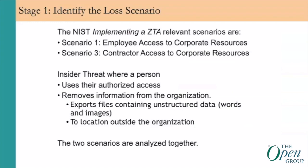Getting down to the brass tacks, the first stage is to identify what is the loss scenario. We have two specific scenarios drawn from a draft NIST document: employees who have access to corporate resources and contractor access to corporate resources. As I looked at these, they seemed like two groups with some differences but effectively the same, so they'll be treated as one scenario.